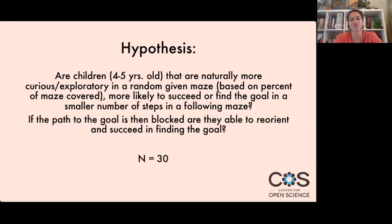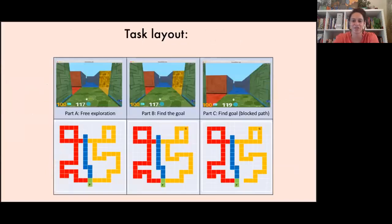Our first experiments look to see if children ages 4 to 5 that are naturally more curious or exploratory in a given maze are able to succeed at finding a goal in a later maze. First we have children explore the maze for three minutes. They are not given any specific instructions or goals or even told how long they have. We then take the percentage of the maze that they explored as a curiosity or exploration measure. We then introduce a goal into the same maze which looks like a squishy little gummy bear and ask children to find it. We then time how long it takes them via the number of steps they took. For the third part we block the path to the main goal and measure how quickly the children can readjust to a new map.